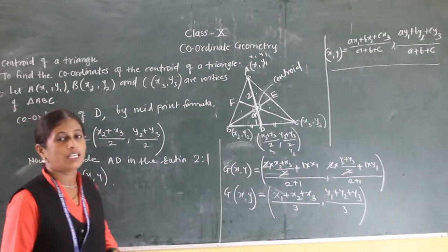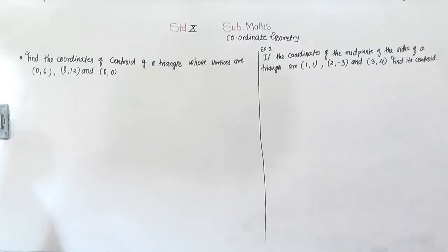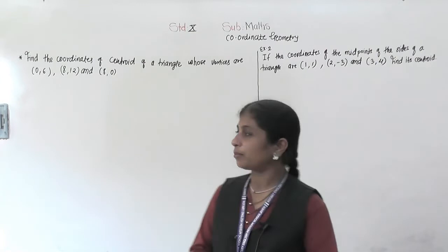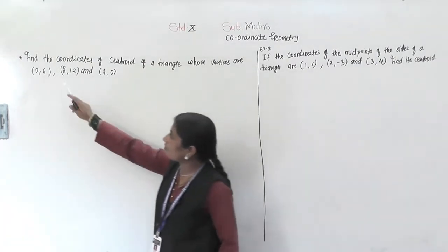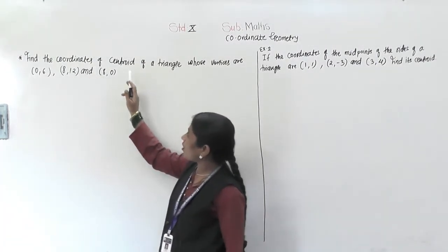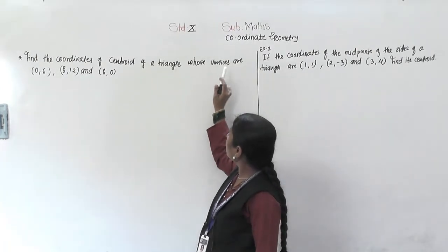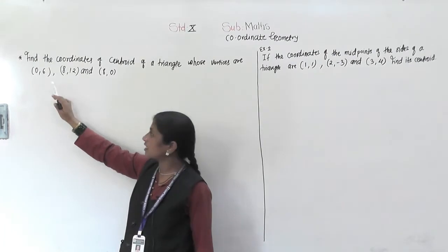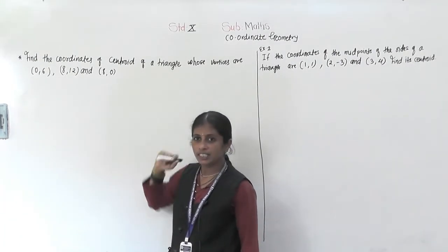Understood. Now we will see the examples on these. The first example: find the coordinates of the centroid of a triangle whose vertices are (0, 6), (8, 12), and (8, 0).